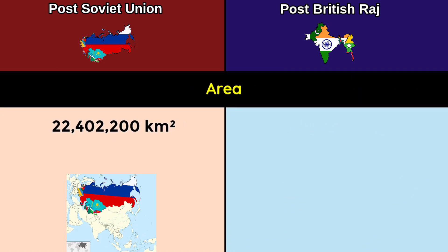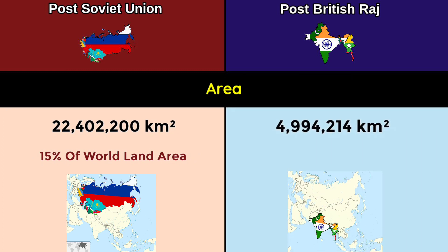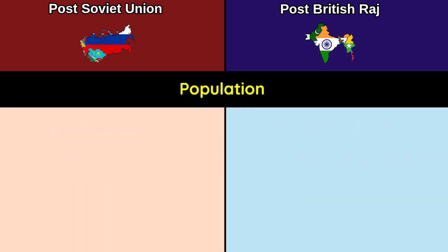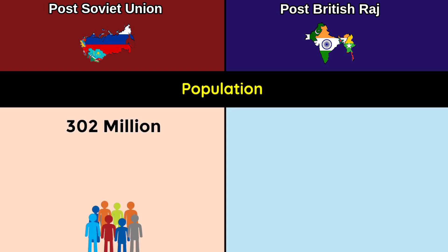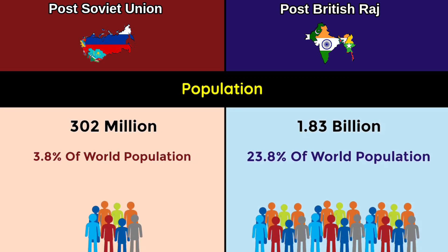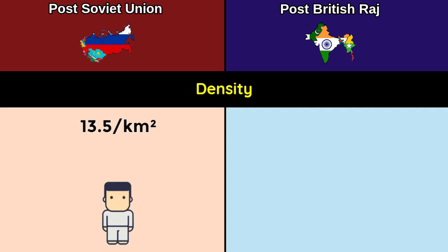Members: 15 countries versus 4 countries. Area: 22.4 million square kilometers (15% of world land area) versus 4.99 million square kilometers (3.35% of world land area). Population: 302 million (3.8% of world population) versus 1.83 billion (23.8% of world population). Population density: 13.5 per km² versus 378.4 per km².